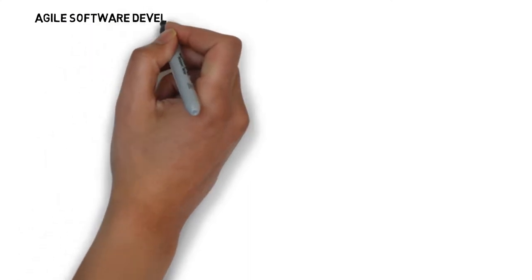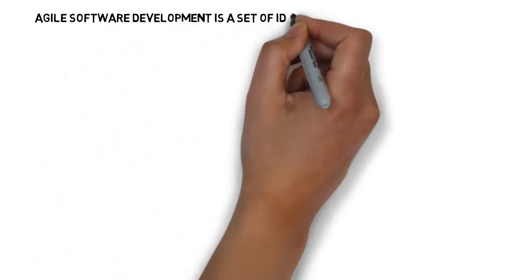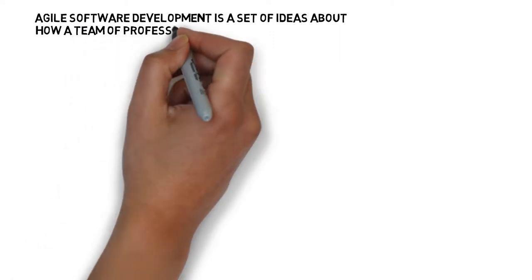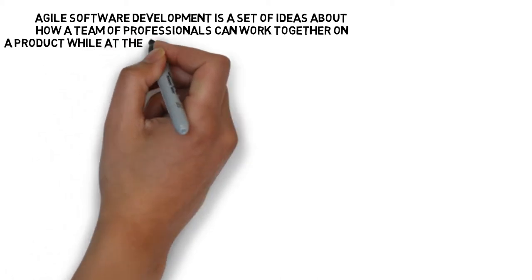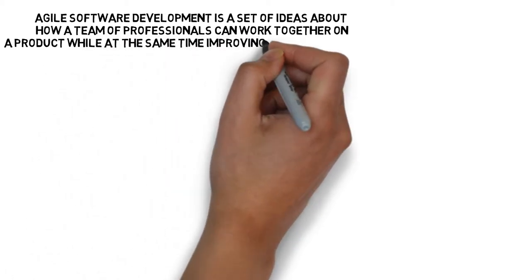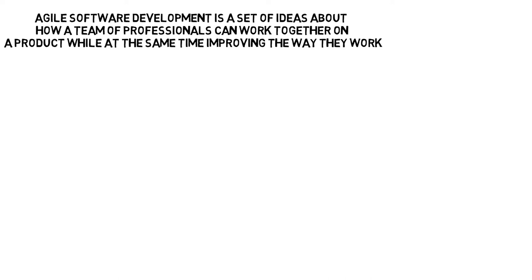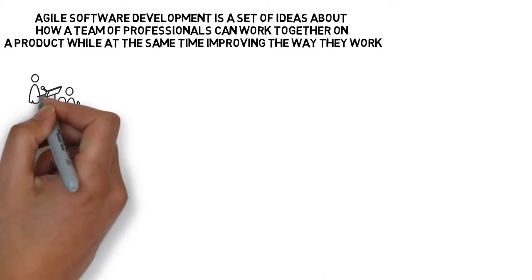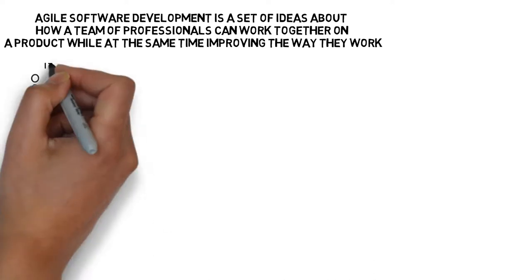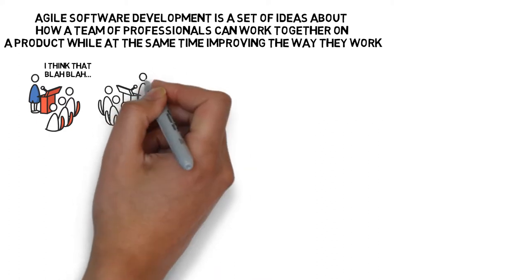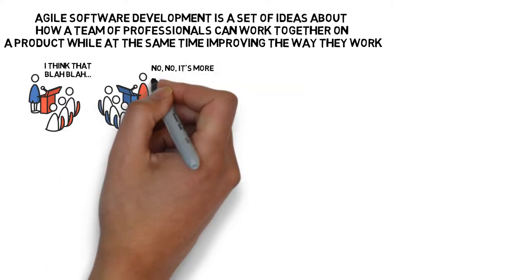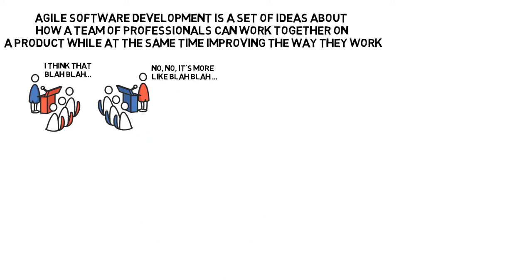Agile Software Development is a set of ideas about how a team of professionals can work on a product while at the same time improving the way they work with each other. This is where the word Agile comes from. Agility means the capability of changing to better fit the given circumstances. As such, Agile lacks carved-in-stone definitions. It has guidelines and a very vibrant community of people eager to discuss advantages, disadvantages, deployment, difficulties and side effects of given Agile practices. But in a way, it is possible to define Agile in negative terms, that is, by saying what it isn't.